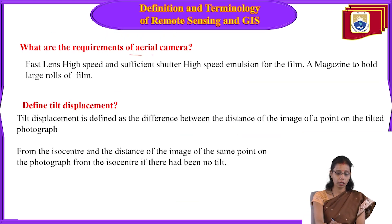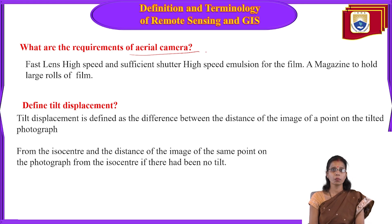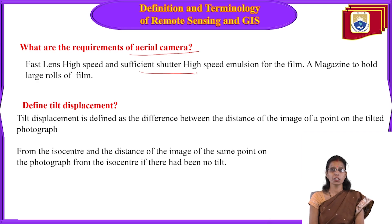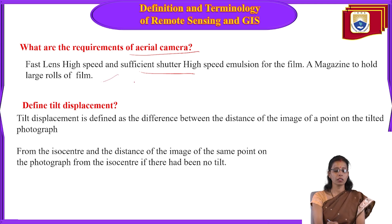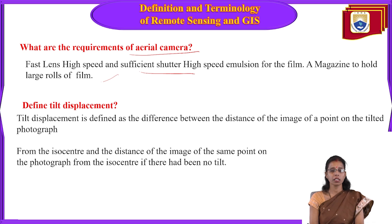The requirements of an aerial camera are: a fast lens, high speed, sufficient shutter, high-speed immersion of the film, and a magazine to hold large volumes of film. These are the key requirements for aerial photography.